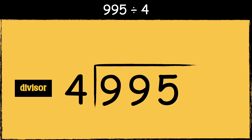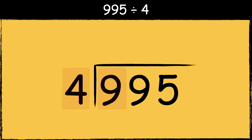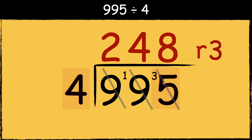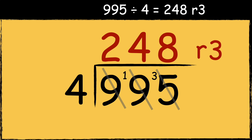So we need to find out how many times the divisor fits into these numbers. Four goes into nine twice with one left over. Four goes into 19 four times with three left over. Four goes into 35 eight times with three left over. As there are no more numbers left to divide, this left over three is the remainder. So the answer is 248 remainder three.